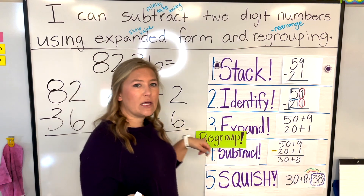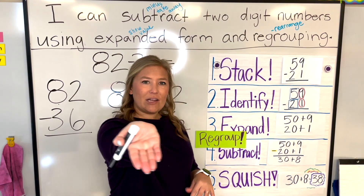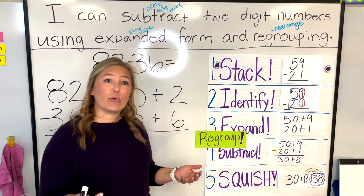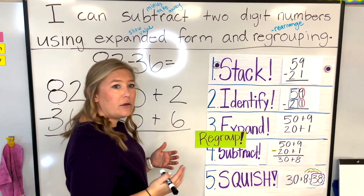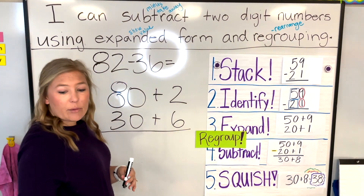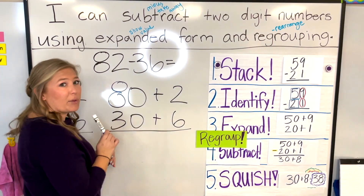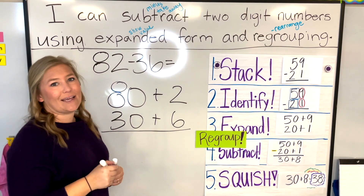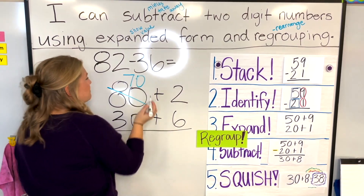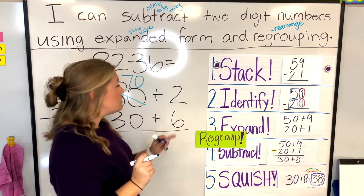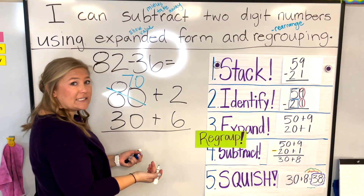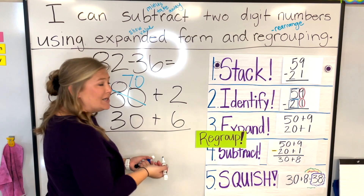If I was holding two M&Ms and you asked me for six, I'd say, are you crazy? I only have two. So I need to regroup — rearrange my number. If I look at my tens place, it has eight tens. I'll take one ten, which leaves me with seven tens, or 70. Now I give that group of ten to my ones place — I can't leave it out or my number changes. Adding one group of ten to the number two gives me 12.